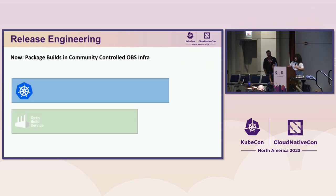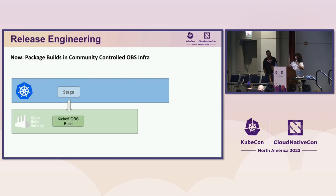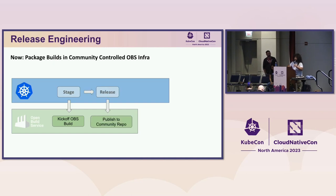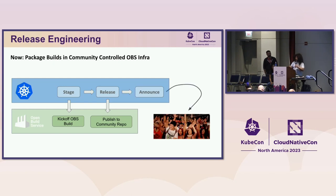So we changed things. The way we do it now is that during the staging process, we kick off the builds of the packages — all of the debs and RPMs get built using SUSE's Open Build Service. Then, when we release, we use their API to publish the newly built packages to the community repositories. And then finally, we announce the release.